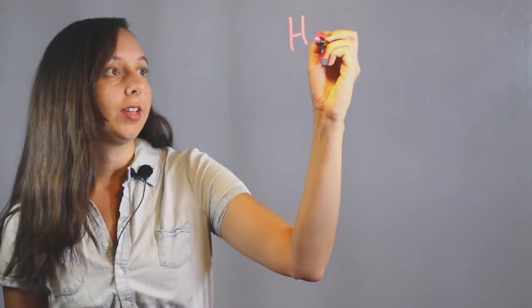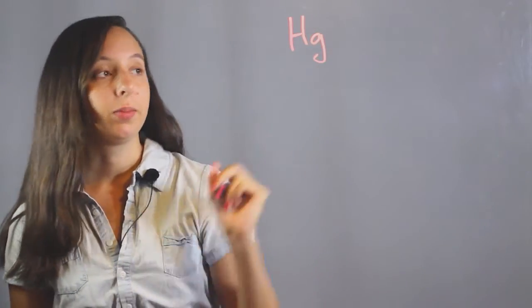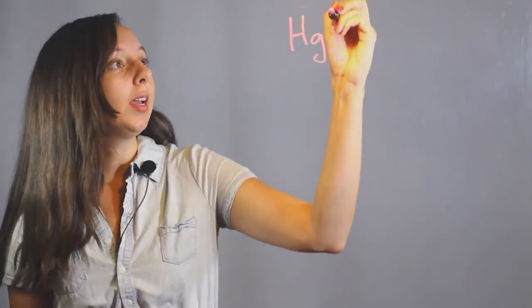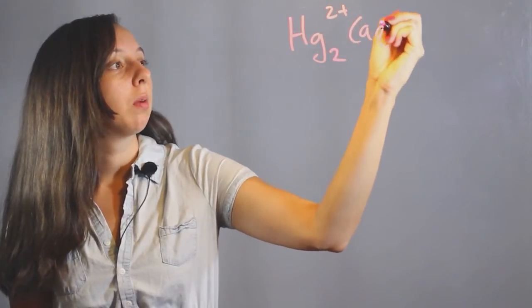So let's take a look at the ions we're going to be using. For mercury, we're going to write that as Hg, that's its atomic symbol, and if it's aqueous, it's probably going to be a dimer, means there's two of them, and it has a positive 2 charge. We'll write this in parentheses, so we remember it's aqueous.